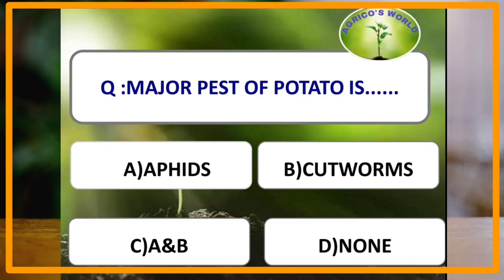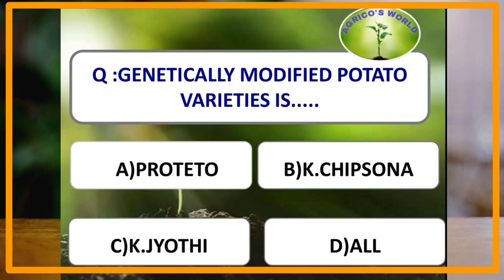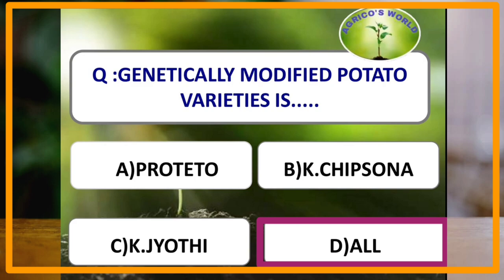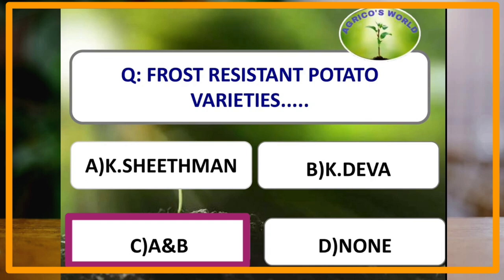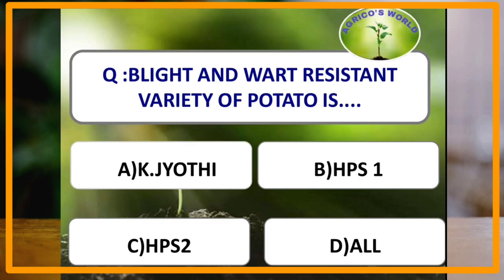Major pests of potato are aphids and cutworms. Genetically modified potato varieties are Protito, Kufri Chipsona, and Kufri Jyoti. Frost-resistant varieties of potato are Kufri Sheetman and Kufri Deva.